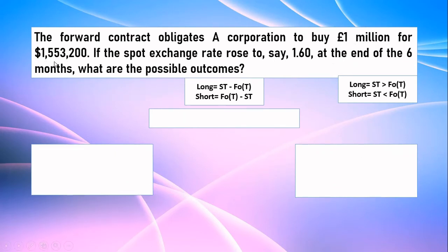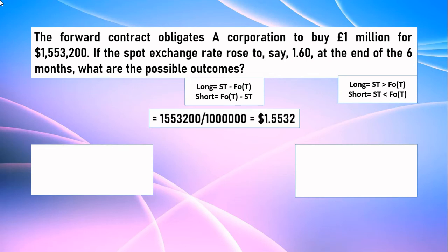Now let's do another problem. A forward contract obligates a corporation to buy one million pounds for $1,553,200. If the spot exchange rate rises to 1.60 at the end of six months, what are the possible outcomes? Don't be confused — it's not similar to the previous problem but it's even easier. We simply divide the dollar amount by the pound amount to get how many dollars equal one pound. One pound equals $1.5532.